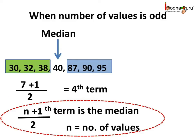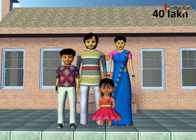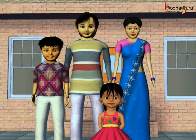Now how do we choose the median value? There are 7 values, and here the median is the 4th value. We find the median using a simple formula: when the number of values is odd and n represents the number of values, the term (n+1)/2 is the median. So here (7+1)/2 = 8/2 = 4. The 4th value is the median, and the 4th value is 40 — so the 40 lakh house is the median.